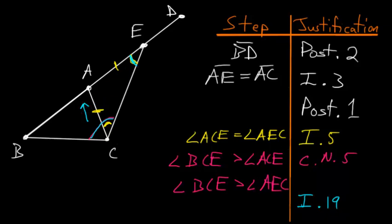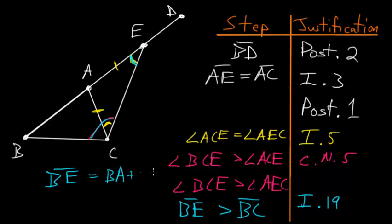So what we can do is write that the side BE is bigger than the side BC. But we know that the line BE is just equal to the line BA plus AE. And we also know that the line AE is equal to the line AC. So BE is equal to BA plus AC.